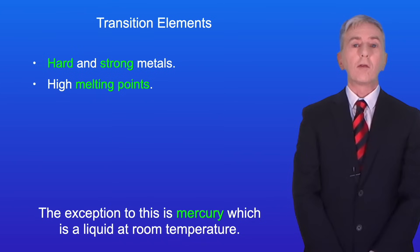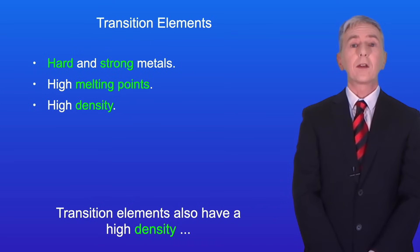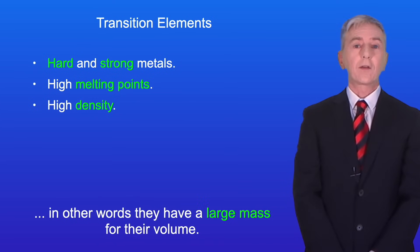The exception to this is mercury, which is a liquid at room temperature. Transition elements also have a high density. In other words, they have a large mass for their volume.